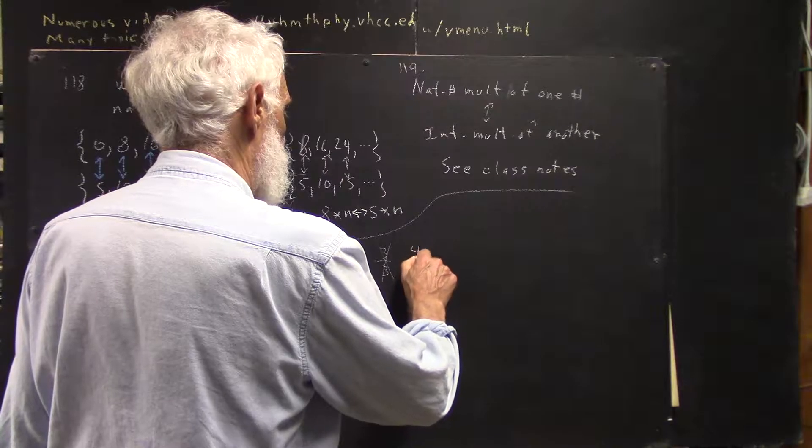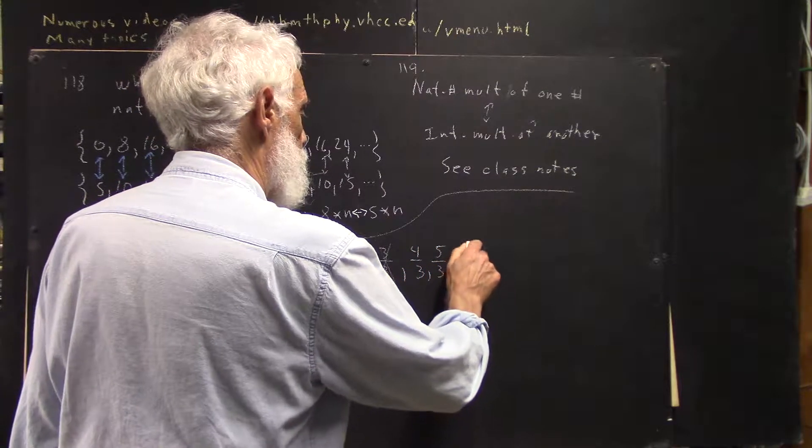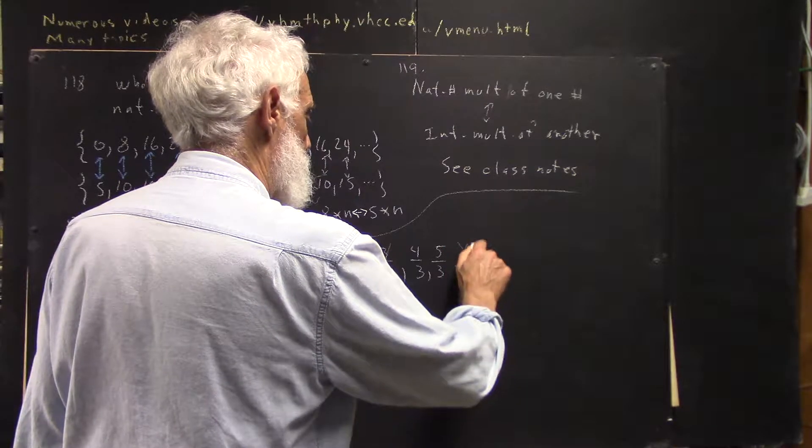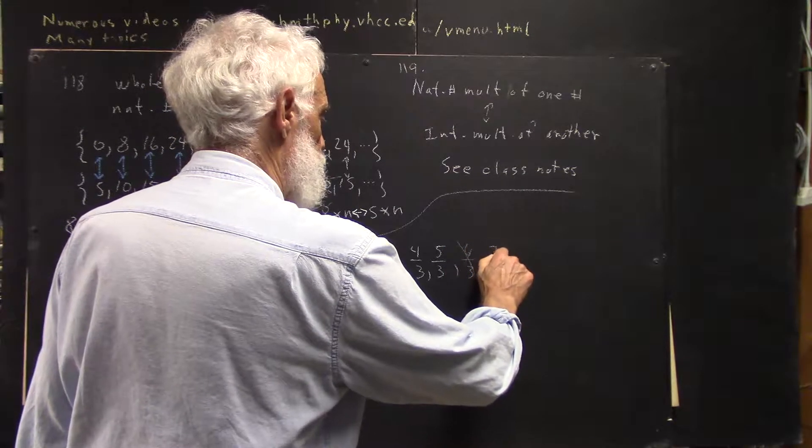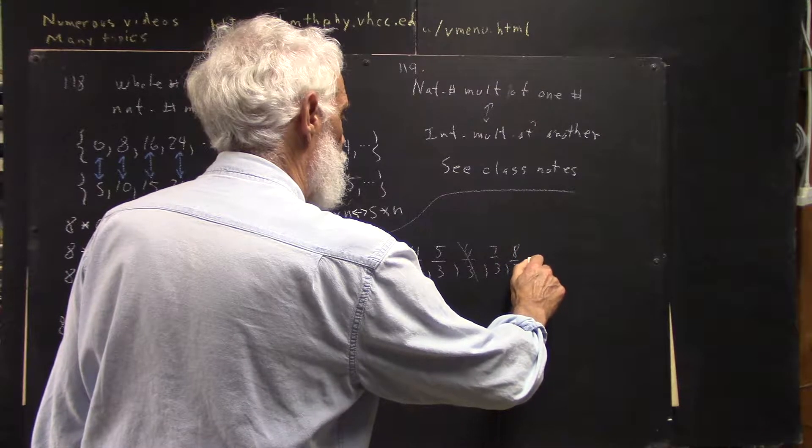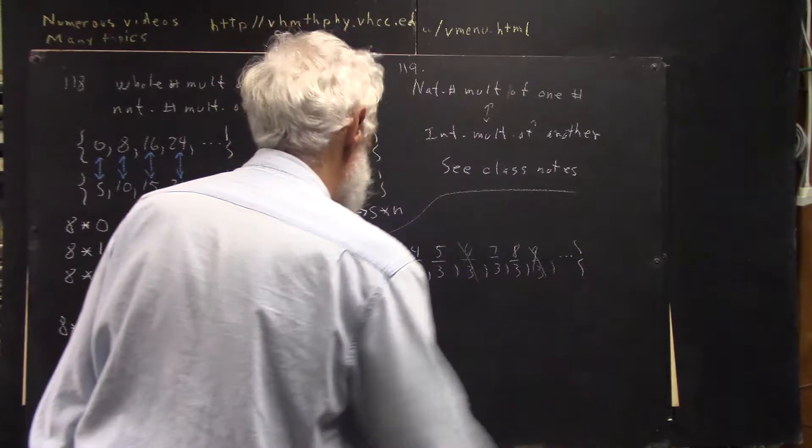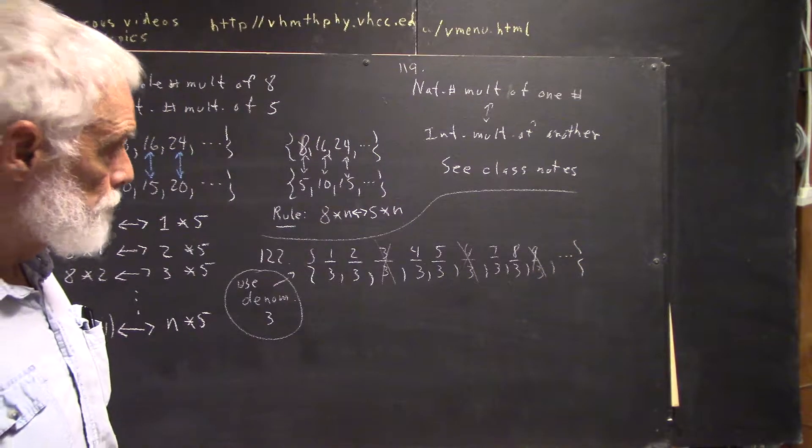And then we would do 4 thirds. That doesn't reduce. And 5 thirds, but we're not going to do 6 thirds. Then 7 thirds, 8 thirds, but not 9 thirds, and so on.